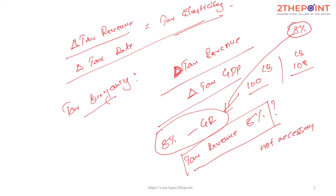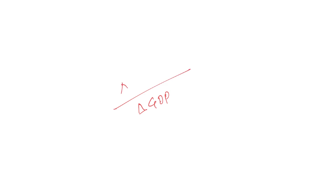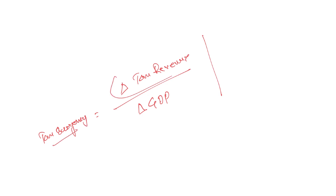So by what proportion does tax revenue change? For a certain change in GDP, what is the change in your tax revenue? Tax buoyancy is simply the measure of the rate of change in tax revenue with a change in GDP.